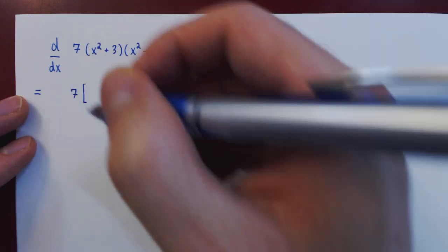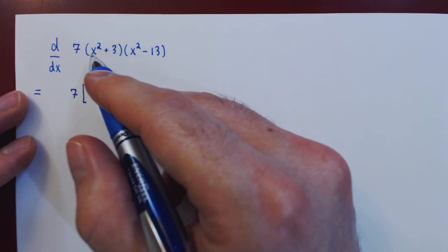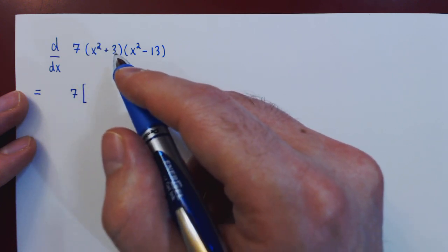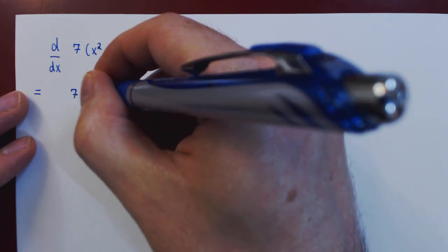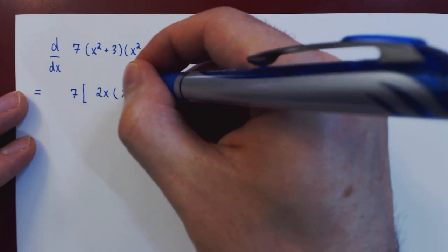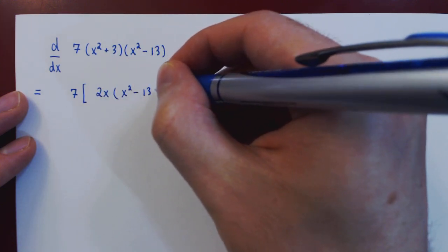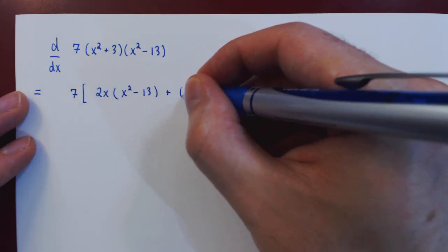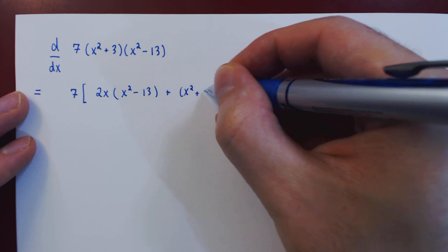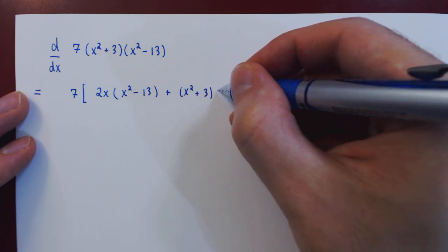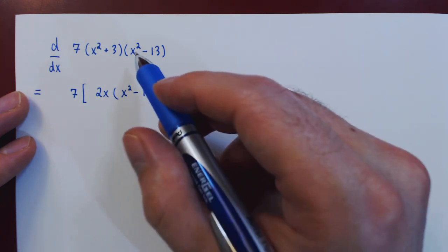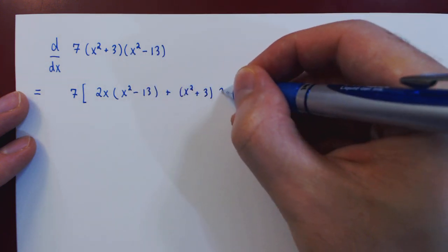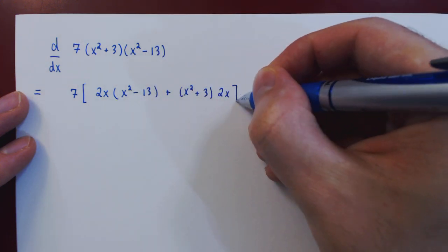We take first the derivative of the first function, which is 2x plus 0, so simply 2x, then times the second function x squared minus 13. Then plus the first function x squared plus 3, then times the derivative of the second function, which is 2x minus 0, so simply 2x.